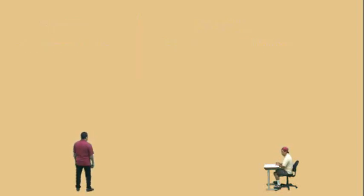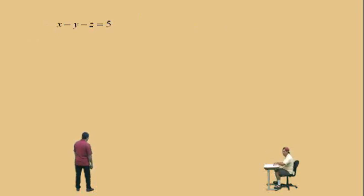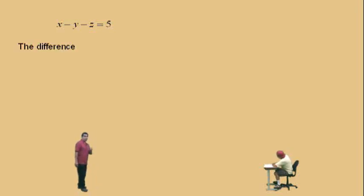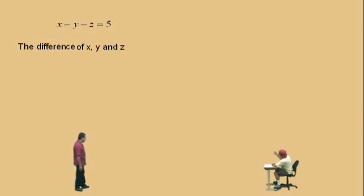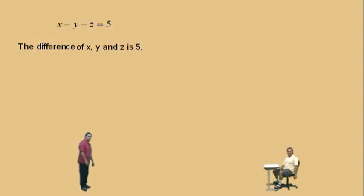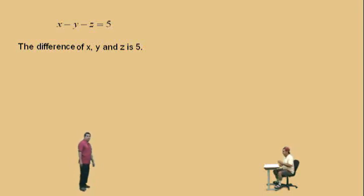Let's do a couple more. Don't get scared — there are three variables here. Is this a sum or a difference, Charlie? Difference. It is the difference of three different variables. It's the difference of what, Charlie? X, Y, and Z. That's right. Now bring us home. Is 5. Very nice. So that is the difference of X, Y, and Z is 5.